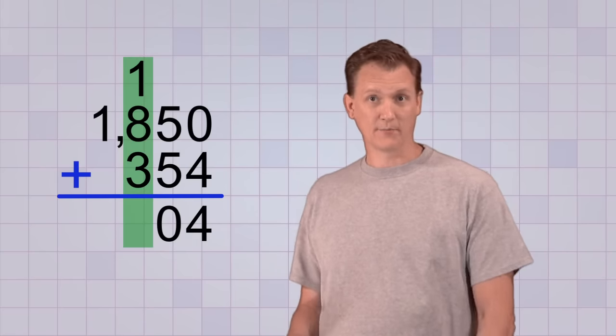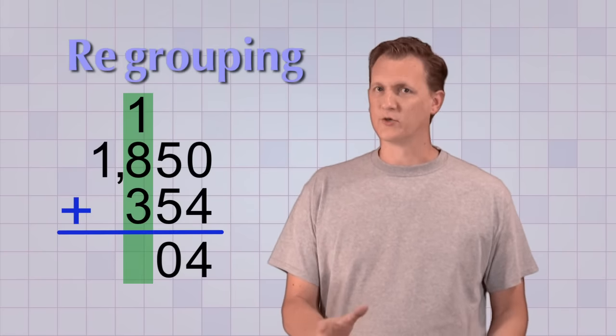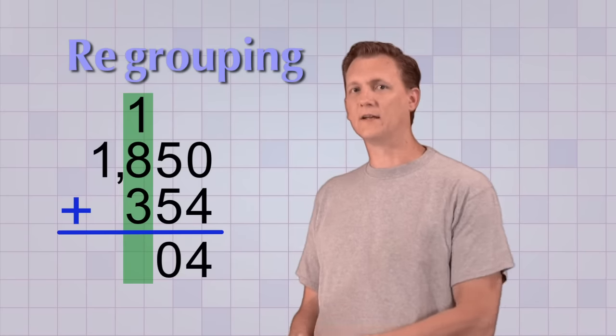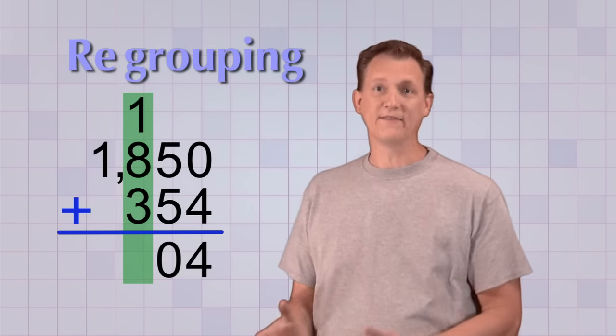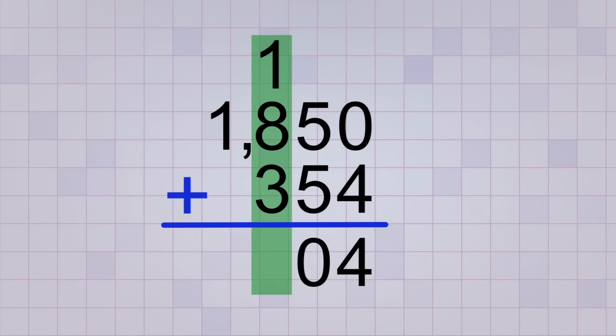And carrying the extra digit up to the next column you're going to add is often called regrouping, because it's really like you're moving a group of 10 to the next column over and leaving whatever's left in the first column.